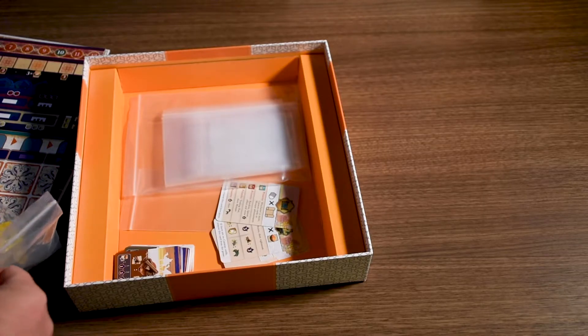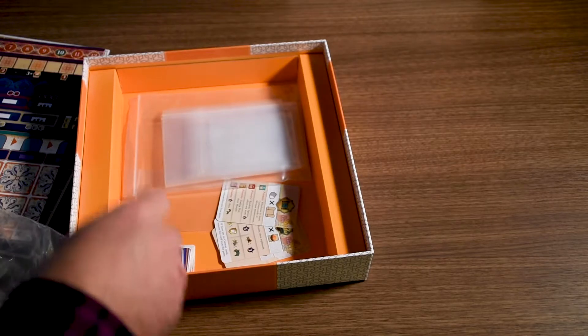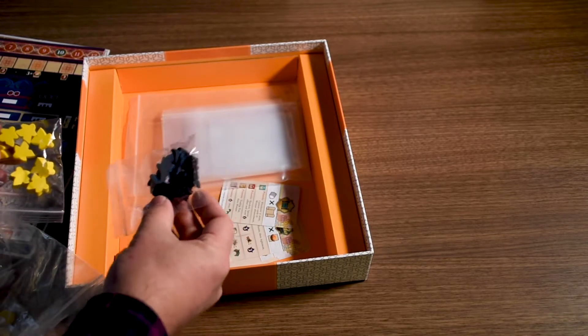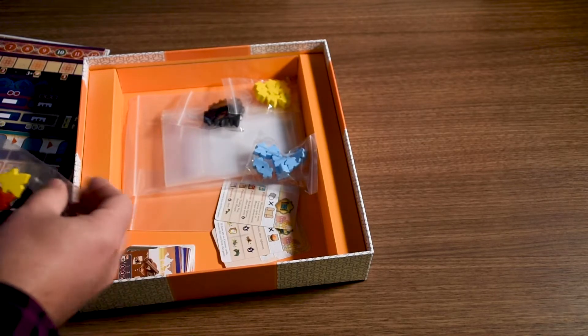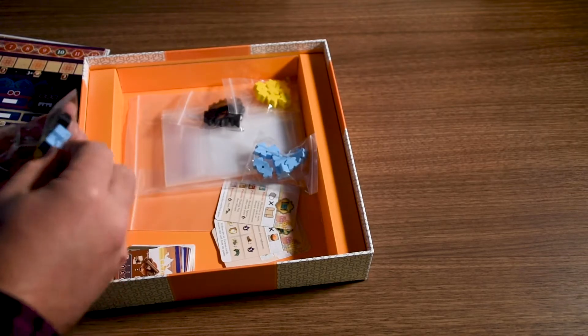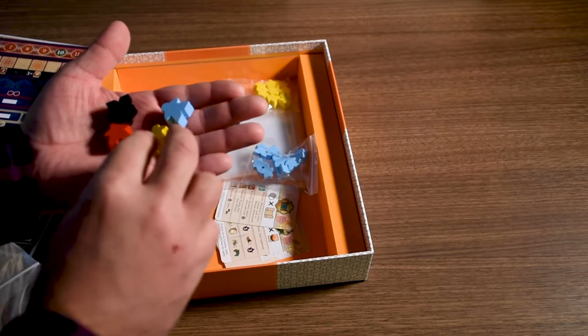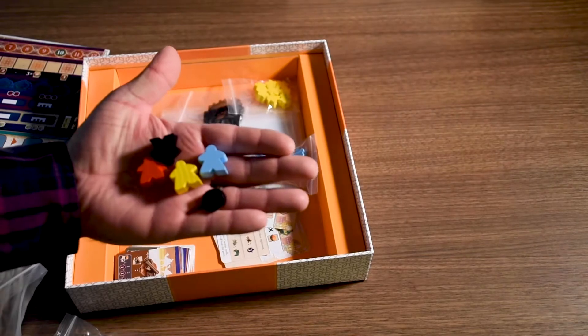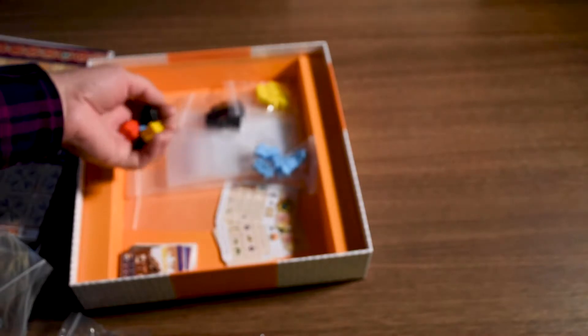And then the big bag of components here. We won't get out every color meeple. We have some black, some yellow, some blue. Let's get these ones out. There's one of each and a marker there. Nice chunky meeples.